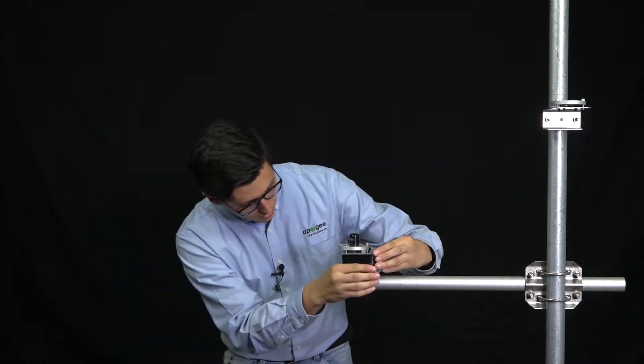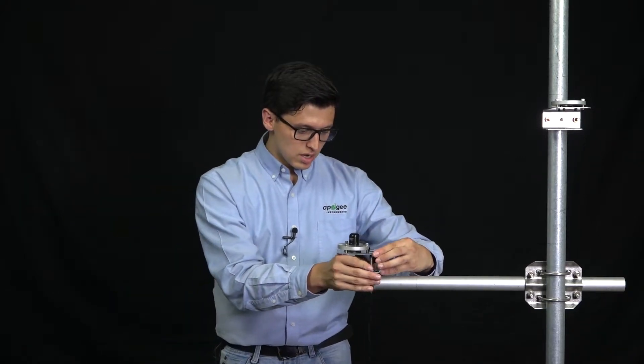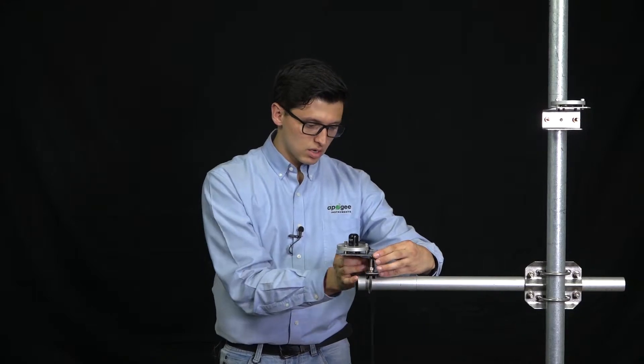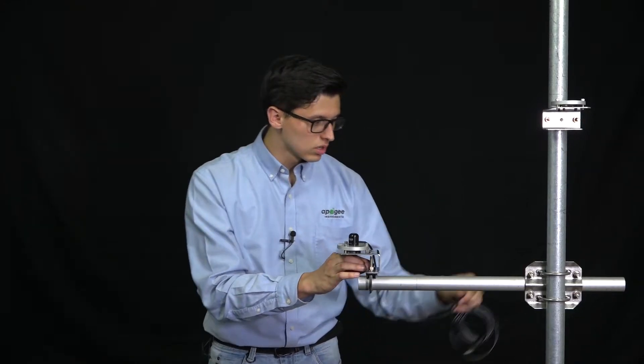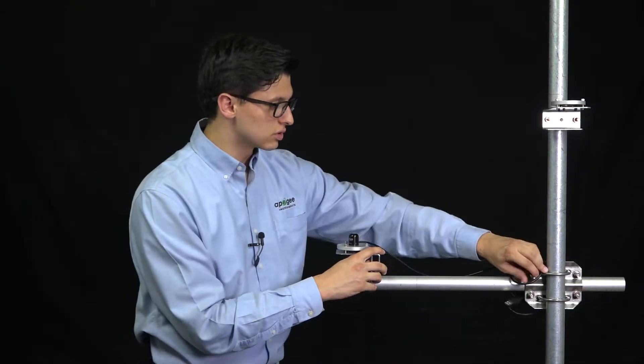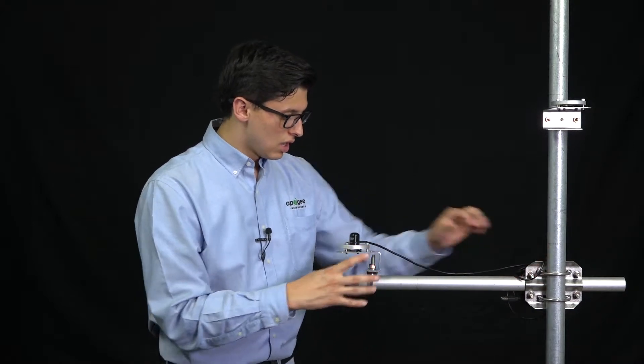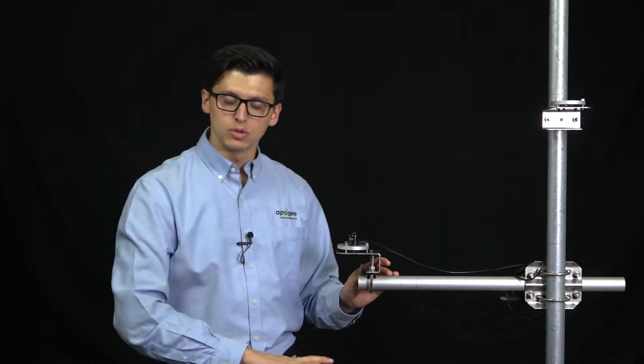Then you can slide this onto your cross arm and finger tighten your hardware until it fits loosely on your cross arm and approximately parallel to the ground.